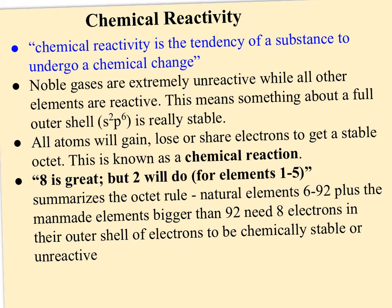So when we're talking about chemical bonds, we're really talking about chemical reactivity. Chemical reactivity is the tendency of a substance to undergo a chemical change. And what scientists realize is noble gases are extremely unreactive. So there's very little chemical reactivity, while all the other elements are reactive. So there must be something about a full outer shell, the S2 and the P6 being full, that makes an element really stable.